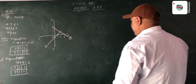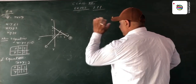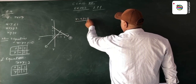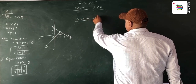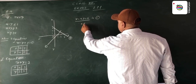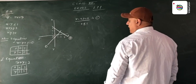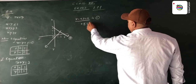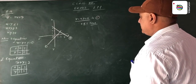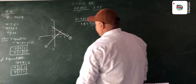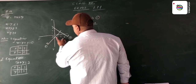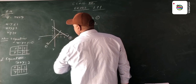Now in this graph, if we put x equal to 0 and y equal to 0 in equation first, we write 0 minus 0, we get 0, and 0 is less than or equal to 1. This is a true statement. Then the area becomes toward the origin — it means these lines make the graph toward the origin side.